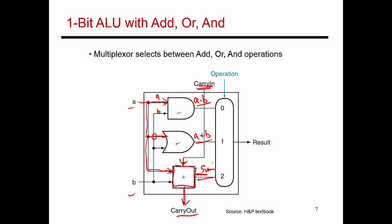The output of this ALU is going to be only one of these three operations. I have a multiplexer which is going to connect one of these inputs to the output, and which input gets connected depends on my operation code. An operation code of 0,0 means I'm doing an AND operation; code 0,1 means I'm doing an OR operation; and code 1,0 means I'm doing an addition. So depending on the value of this code, one of these inputs gets connected to the output. I provide two one-bit numbers and an operation code, and that's the result that emerges from this black box.